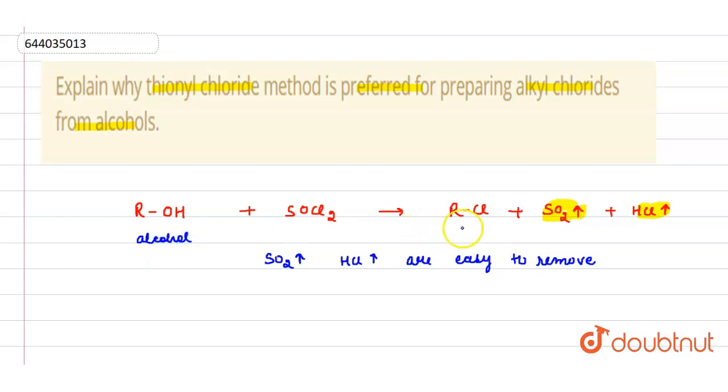So as it is easy to do this method and byproducts can be easily removed, that's why this laboratory method is more preferred for preparing alkyl chloride from alcohol in comparison to the other method,